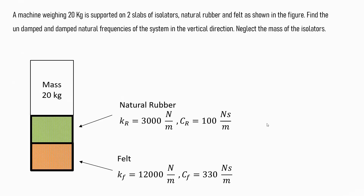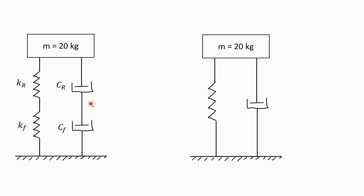Let us see another example. Here we have a machine weighing 20 kg supported on 2 slabs of isolator. The 2 slabs of natural rubber have a stiffness of 3000 N/m and damping coefficient of 100 N·s/m. The bottom support is of felt, with a stiffness of 12,000 N/m and damping coefficient of 330 N·s/m. We need to find the damped and undamped natural frequencies of vibration in the vertical direction. These two supports are in series, so we must find the equivalent spring stiffness and equivalent damping coefficient.